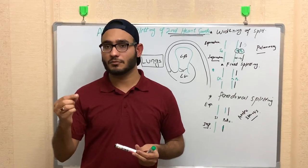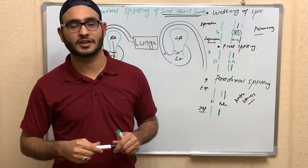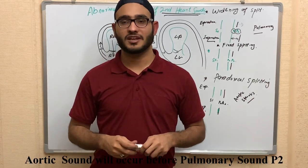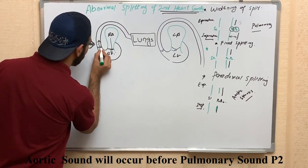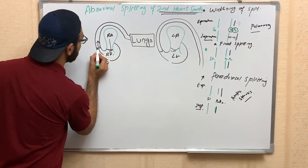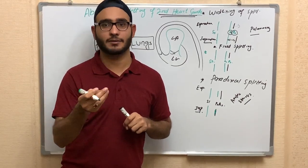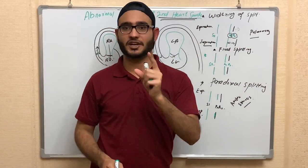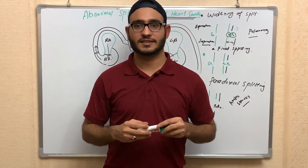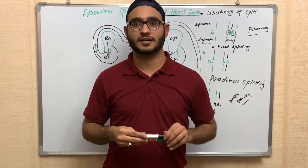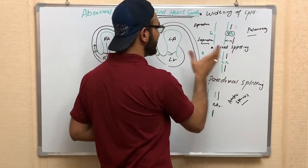Widened splitting may be due to pulmonary valve stenosis, or due to the right bundle branch not working properly — meaning the conduction system is impaired. When there is stenosis in the pulmonary valve, it does not close properly and takes more time, so production of the second heart sound is delayed. This is known as widened splitting. If an exam question asks about a problem in the pulmonary valve or right side of the heart, the answer is widened splitting.